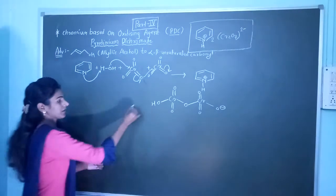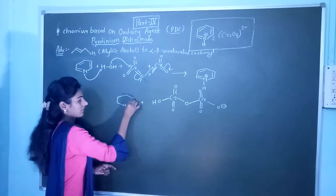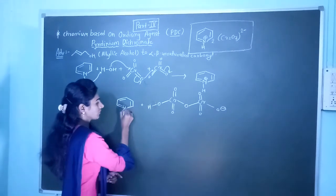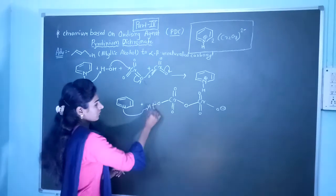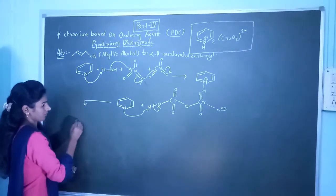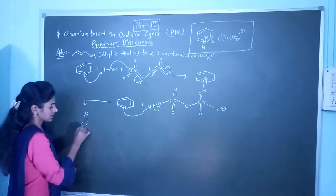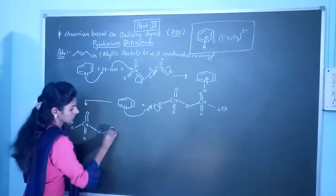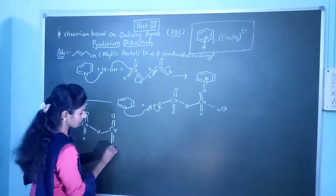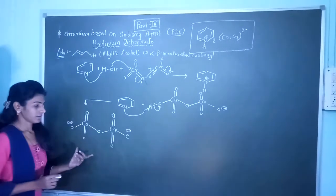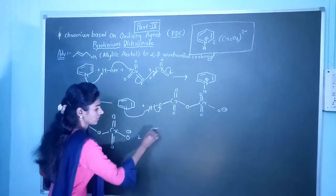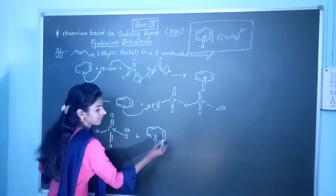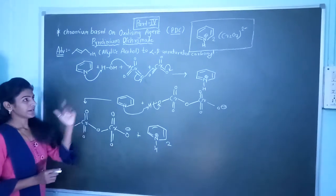Again, one pyridinium molecule is present in our solution and this pyridinium again abstracts the hydrogen of OH, and it becomes O⁻. Our reagent is structured as Cr-O⁻, double bond O, O, Cr double bond O, double bond O, and O⁻, along with two pyridinium molecules with H⁺. This is our Pyridinium Dichromate reagent.